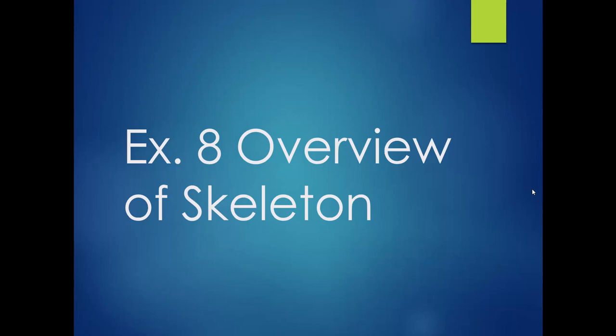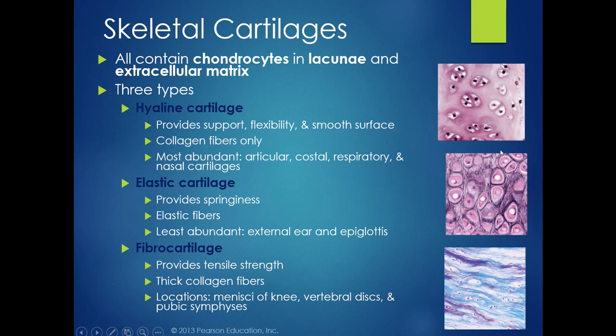Welcome students to exercise 8, which is going to be our introduction to the skeletal system. We're going to start by reviewing the cartilages. While most people think of the bones when they think of the skeleton, the cartilages are also a part of the skeletal system. These are connective tissues with cells and fibers in an extracellular matrix. We have three cartilage types: hyaline cartilage, elastic cartilage, and fibrocartilage.